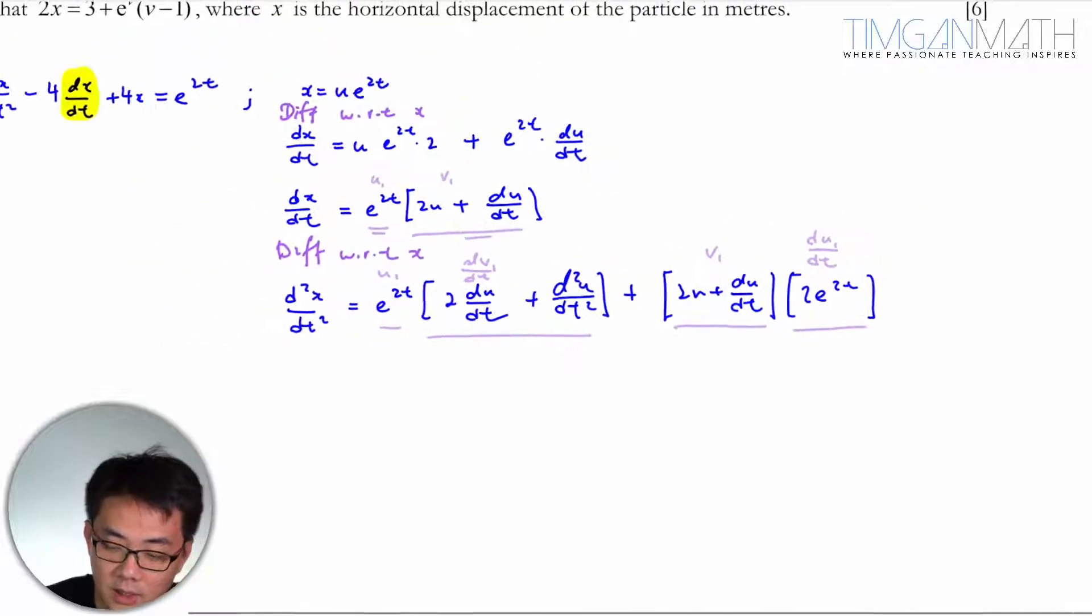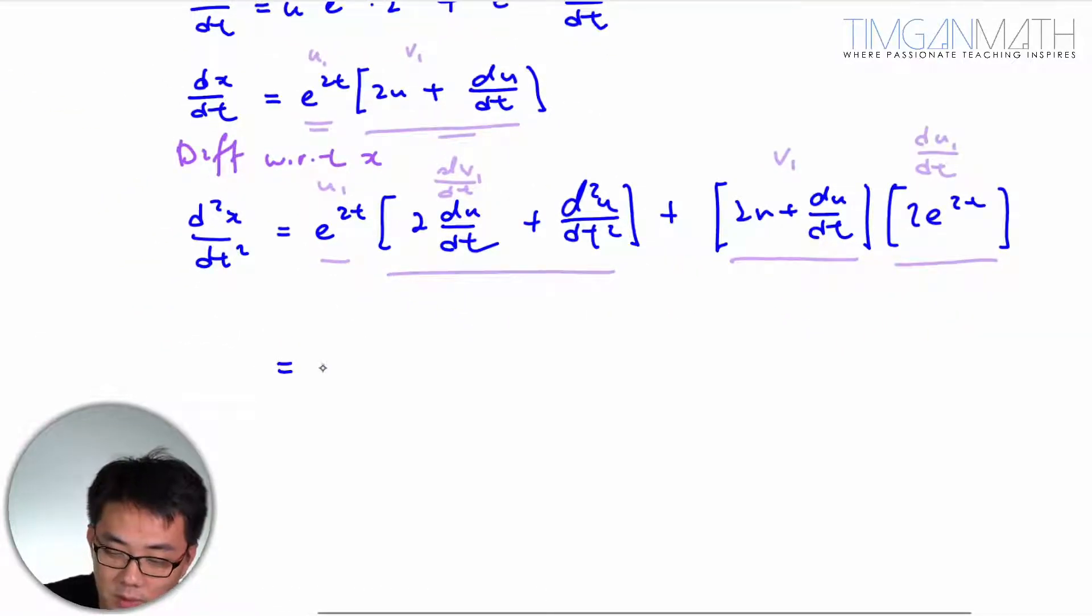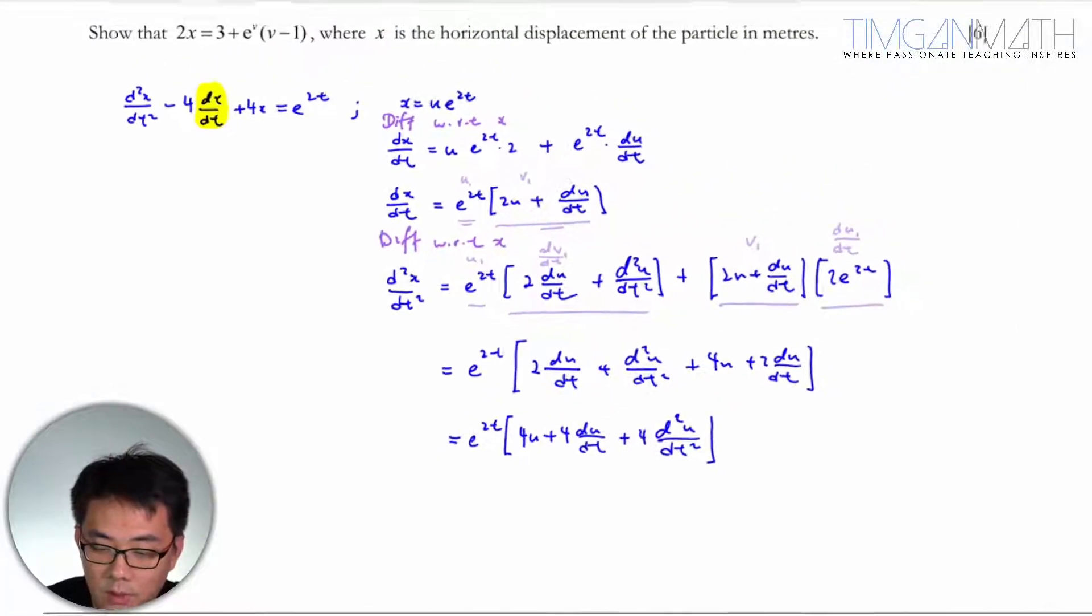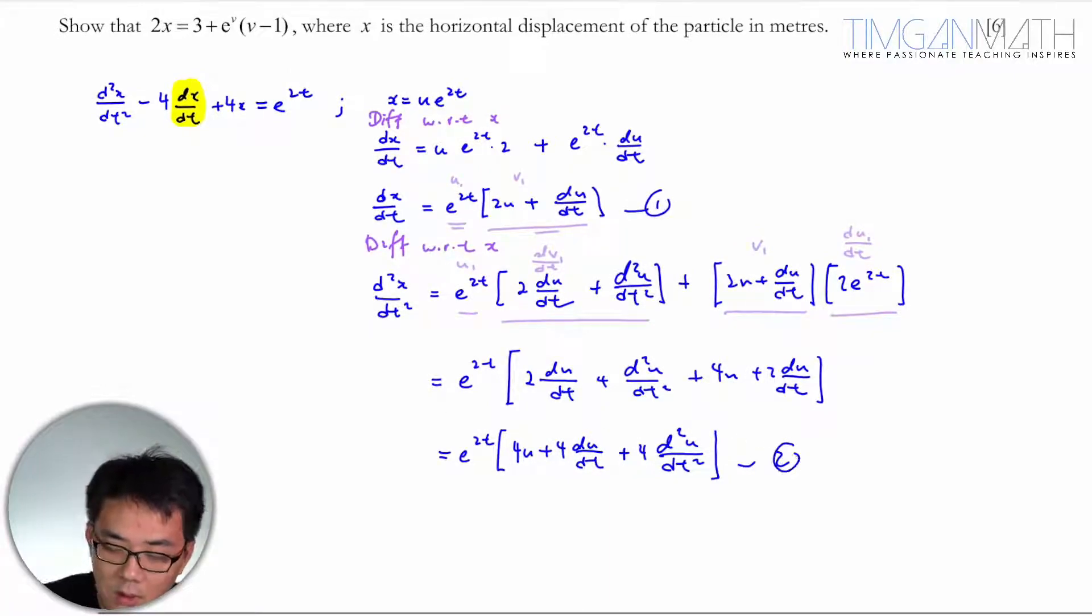Before substituting everything in, I'm going to factorize e^(2t) out. This gives e^(2t)[4u + 4du/dt + 4d²u/dt²]. Now I'm going to substitute equations 1 and 2 into the original equation.